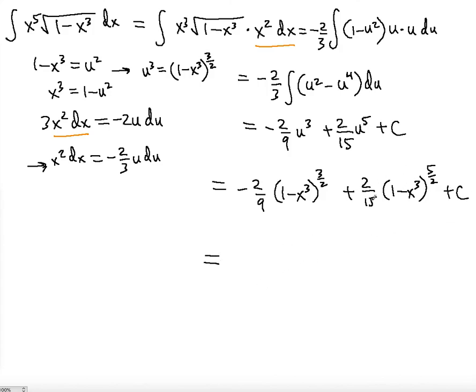2 fifteenths, to start with the positive coefficient just to make it look nicer. 1 minus x to the third to the 5 over 2, minus 2 over 9, 1 minus x to the third to the 3 over 2, plus a constant. So in any case, both of these would be right, but this just looks better because the positive coefficient looks better to start with than the negative one.